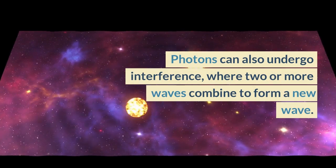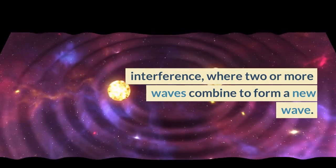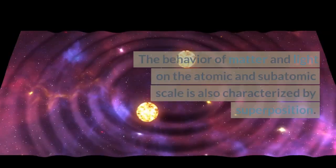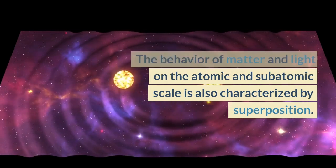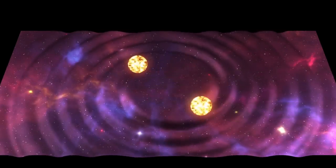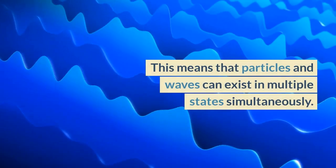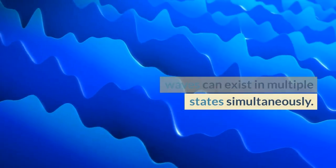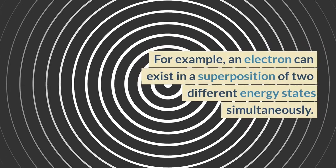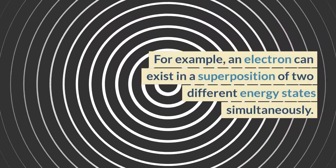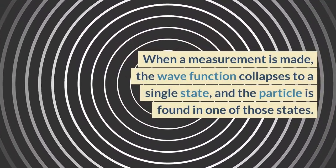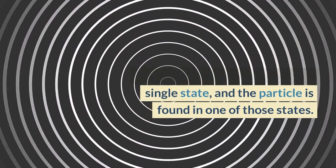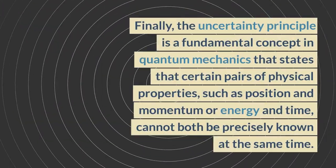Photons can also undergo interference, where two or more waves combine to form a new wave. The behavior of matter and light on the atomic and subatomic scale is also characterized by superposition. This means that particles and waves can exist in multiple states simultaneously. For example, an electron can exist in a superposition of two different energy states simultaneously. When a measurement is made, the wave function collapses to a single state, and the particle is found in one of those states.